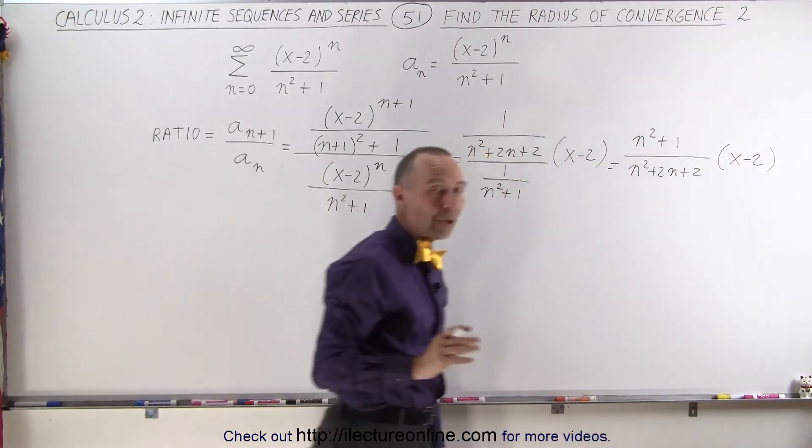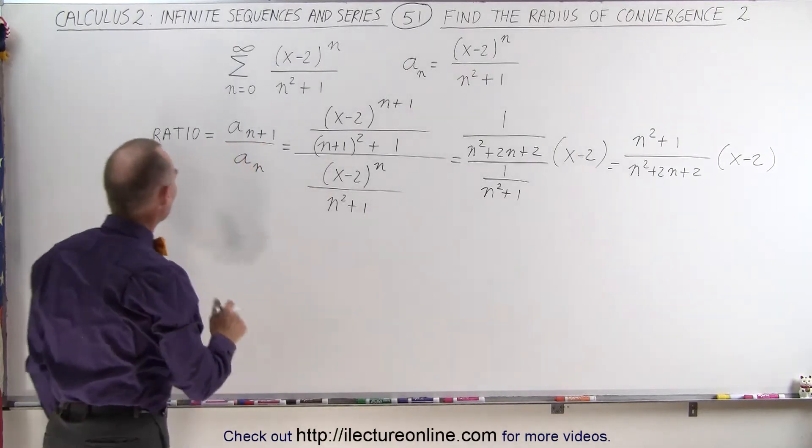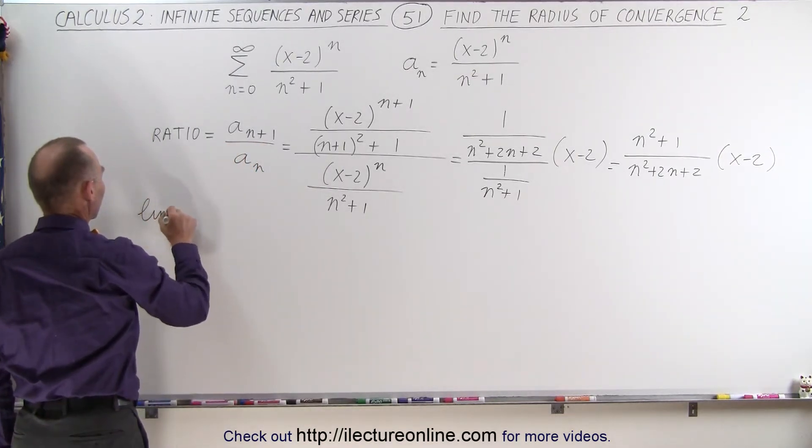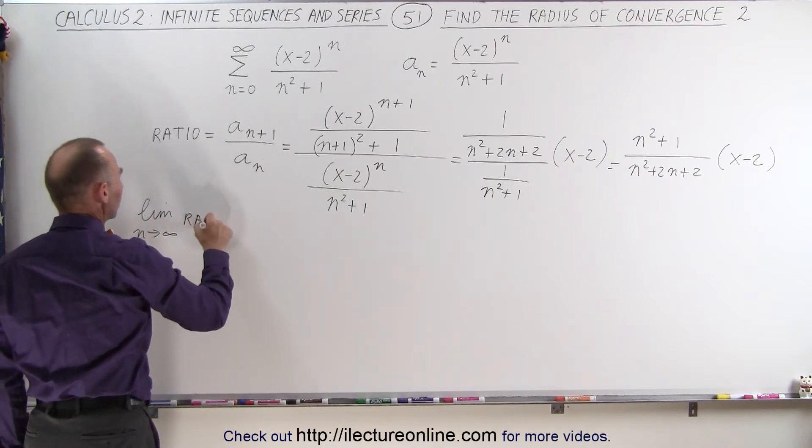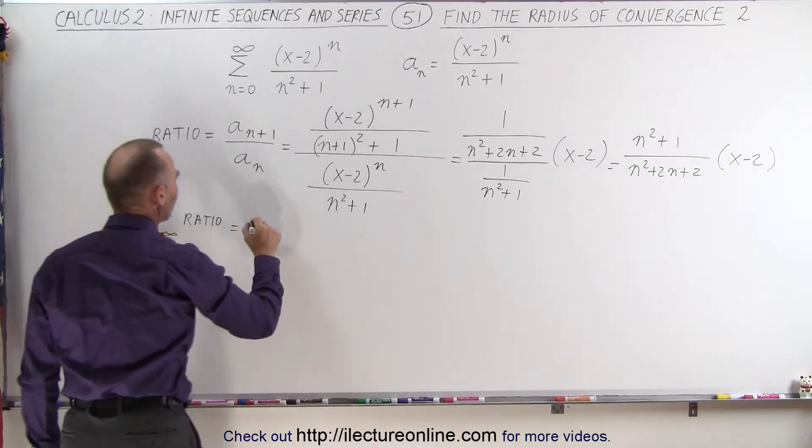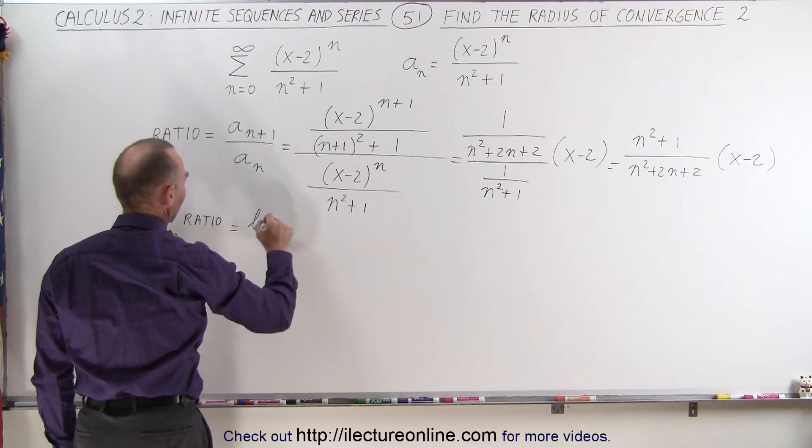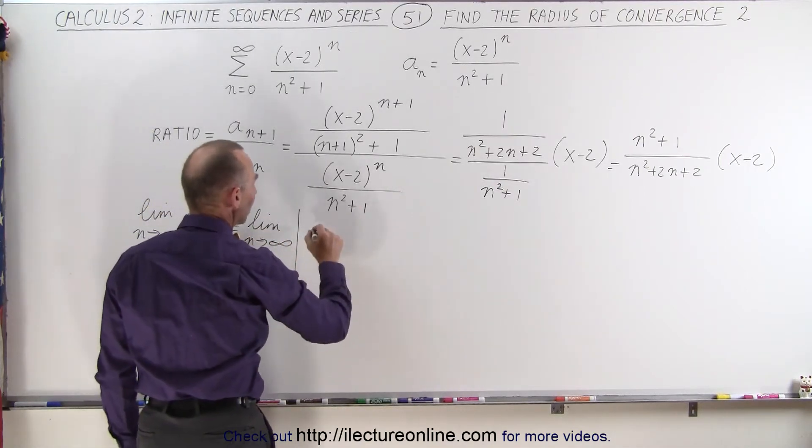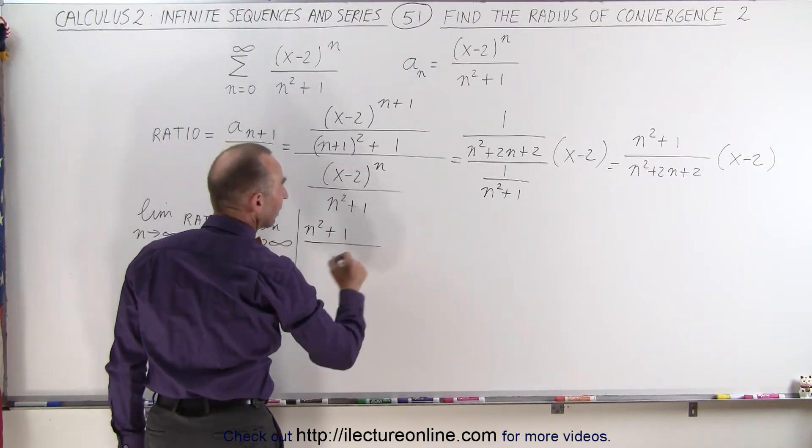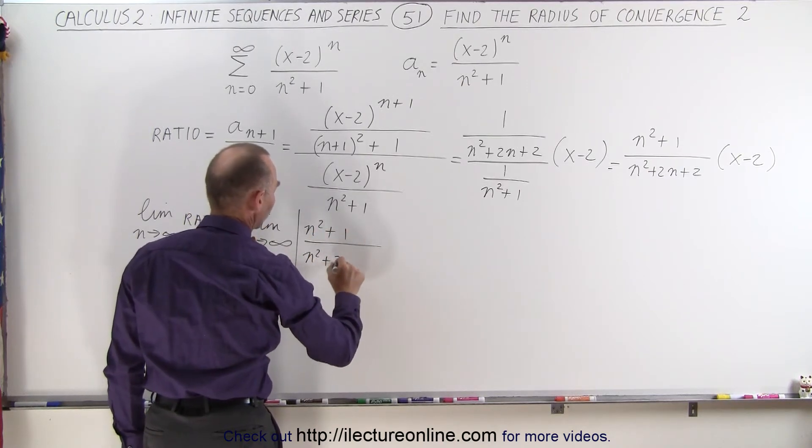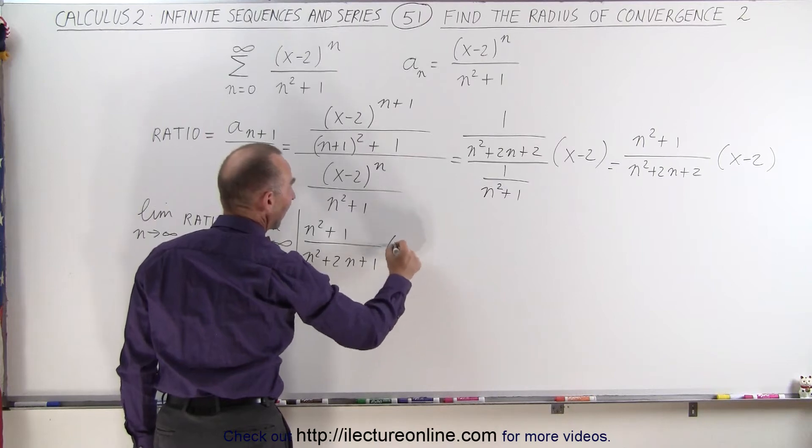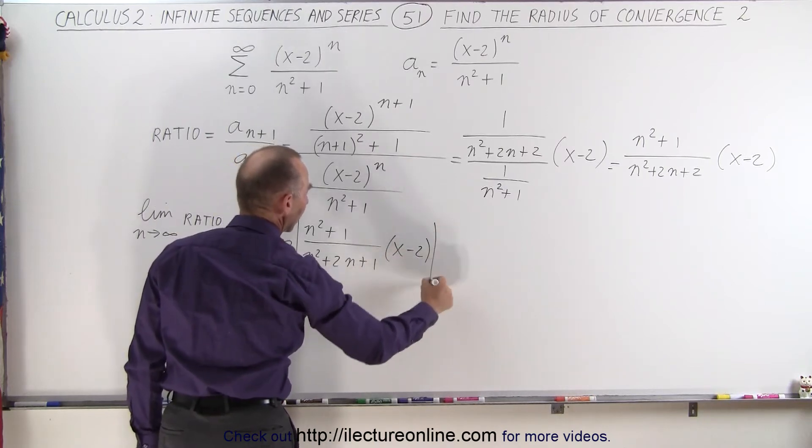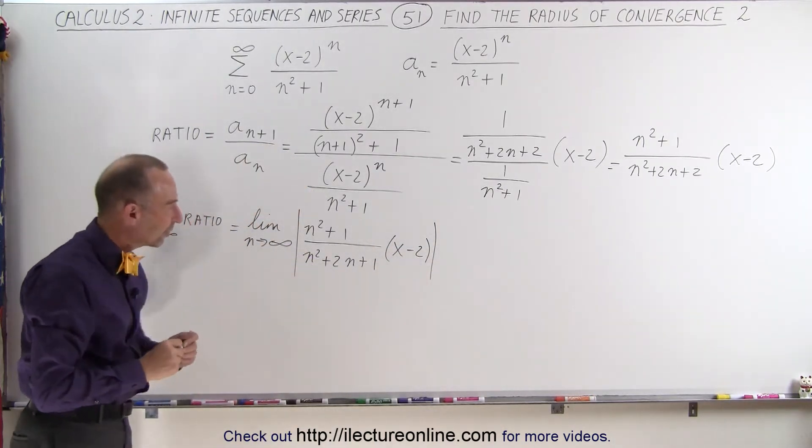That simplifies to n squared plus 1 divided by n squared plus 2n plus 2 times x minus 2. Now we find the limit of that ratio as n goes to infinity, which is n squared plus 1 divided by n squared plus 2n plus 1 times x minus 2, and we'll put that in absolute value signs.